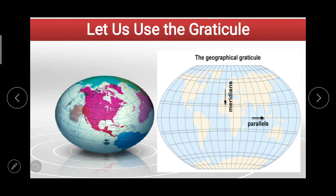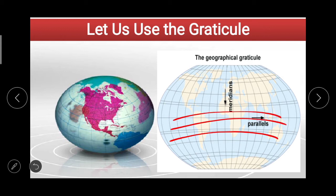The first question which we have to answer by observing the globe: what are the horizontal lines on the globe called? The answer is parallels of latitude.